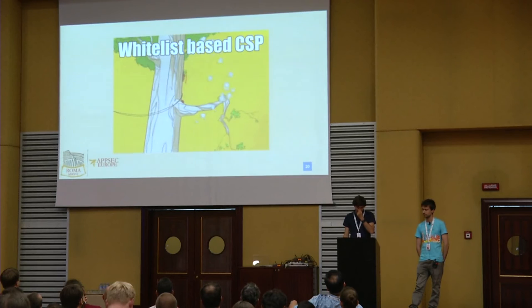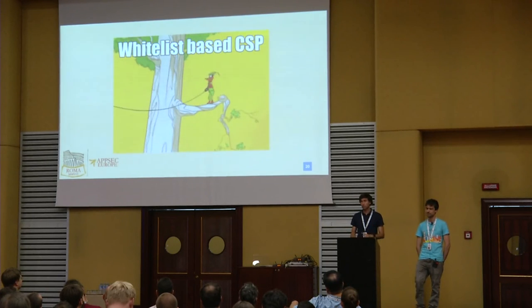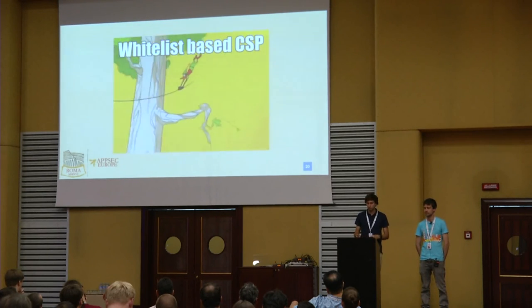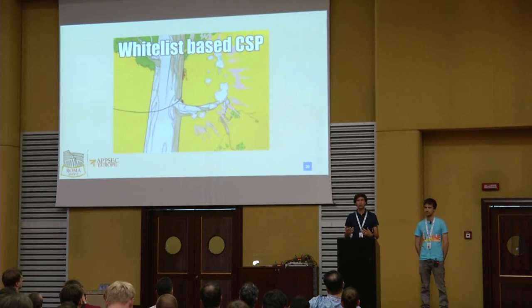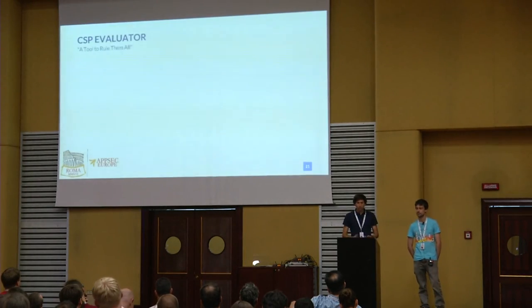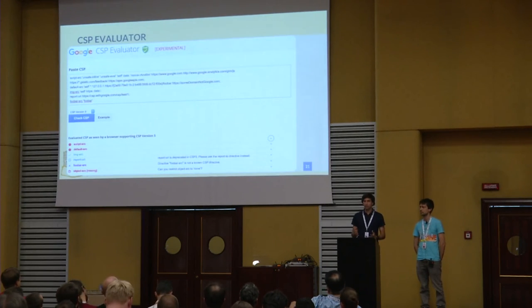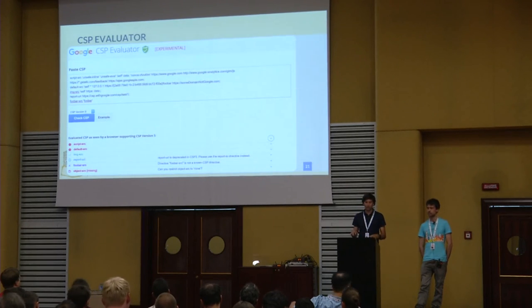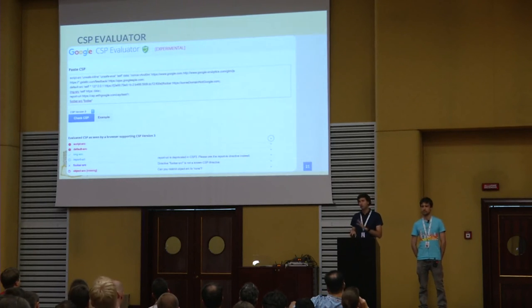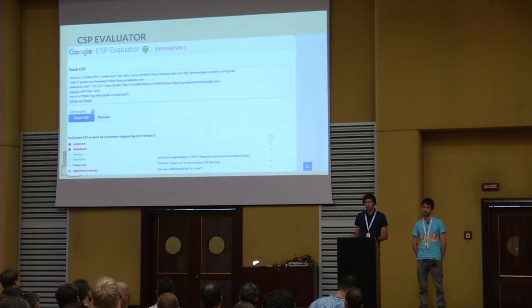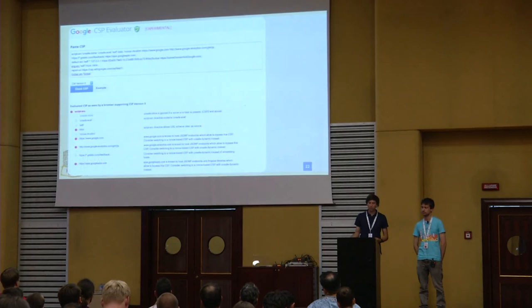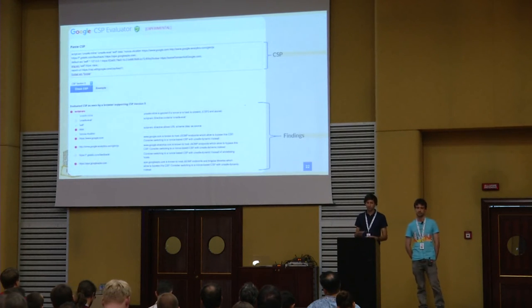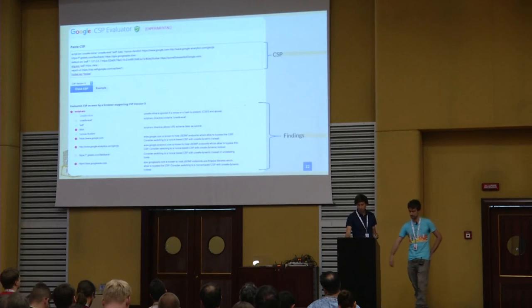TLDR: whitelist-based CSPs are really hard to come up with, hard to maintain, and very often bypassable — which is bad because CSP has great security guarantees if done right. We're building a tool where you paste your CSP and it tells you where you have problems, which directives will be ignored in certain CSP versions, deprecated items, and so forth. It's not released yet but hopefully soon.